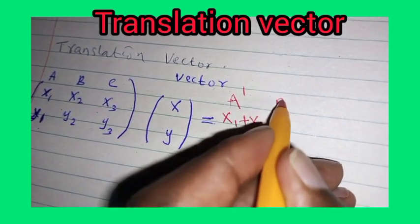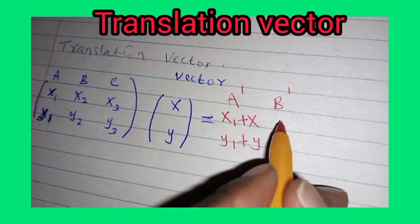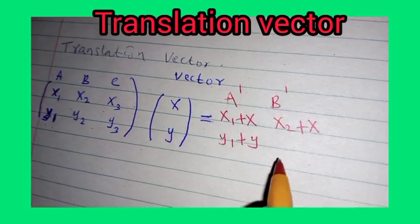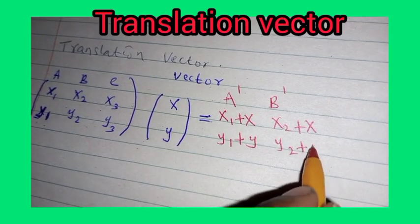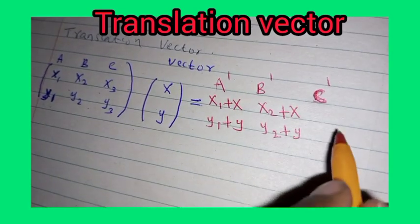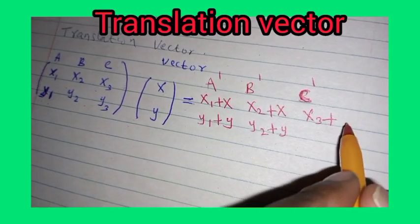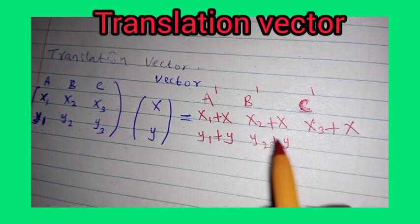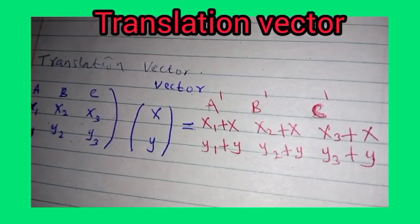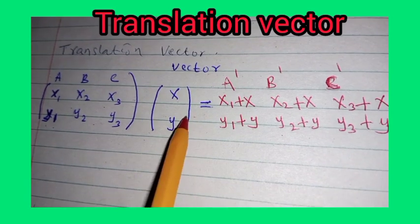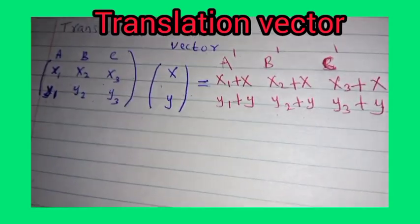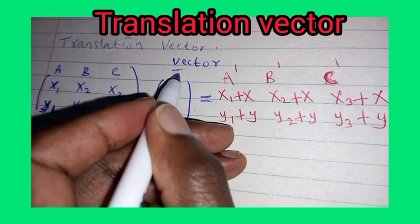For object b, the image will be given by (x2 + x, y2 + y). The image of object c, which is c prime, will be given by (x3 + x, y3 + y). The translation vector is normally represented by T.